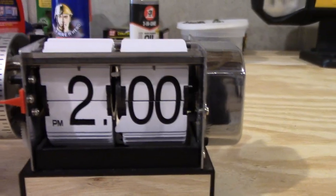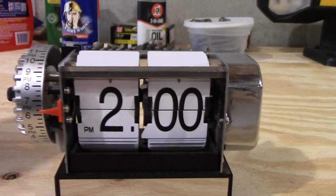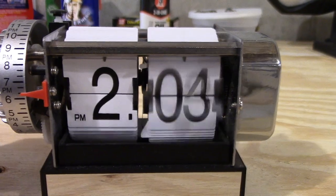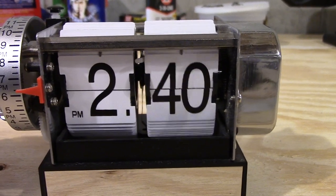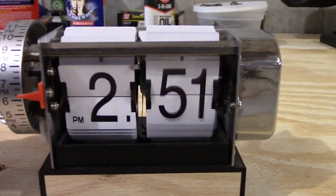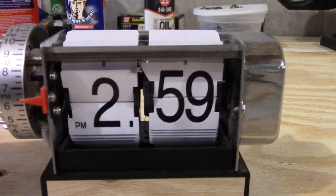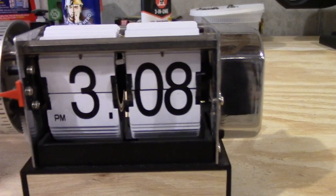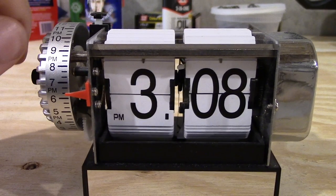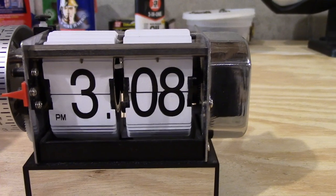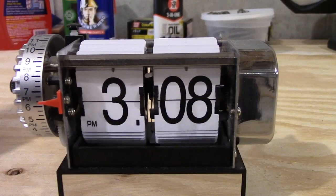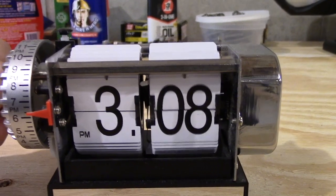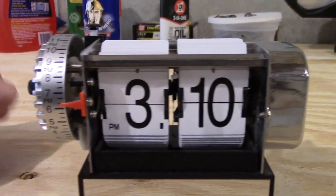The only restriction or downside of the flip clock is, let's say, for example, it's 3 o'clock, but you accidentally go too far. Well, you can flip forward, but you can't flip back. So basically, your only option is to take the batteries out, let time naturally advance, and then put the batteries back in, adjust it accordingly, and then you're all set and good to go.